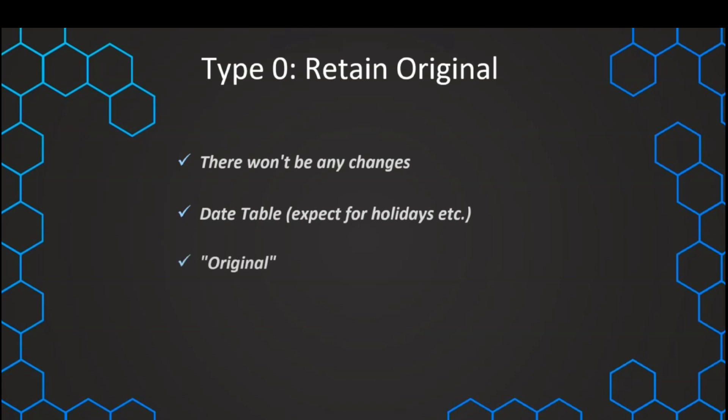So this is a common type. Also there can be many attributes that are just labeled as original — for example, the original product name — that we just know is kept as it is and we will not have any changes in that. If we have such an attribute in our dimension table, this is the easiest option because we don't need to make any changes; we can just load these attributes in our table.